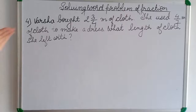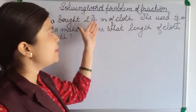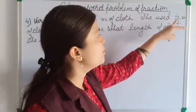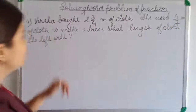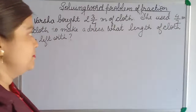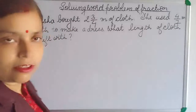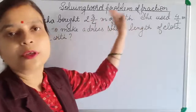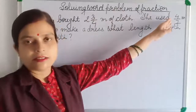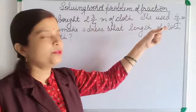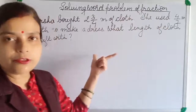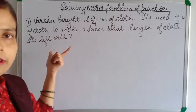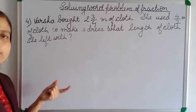Next question: Varsha bought 2 and 3 by 4 meters of cloth and used only 4 by 7 meters to make her dress. What length of cloth is she left with? She did not use all the cloth, so some was left over — we need to subtract to find the leftover length.